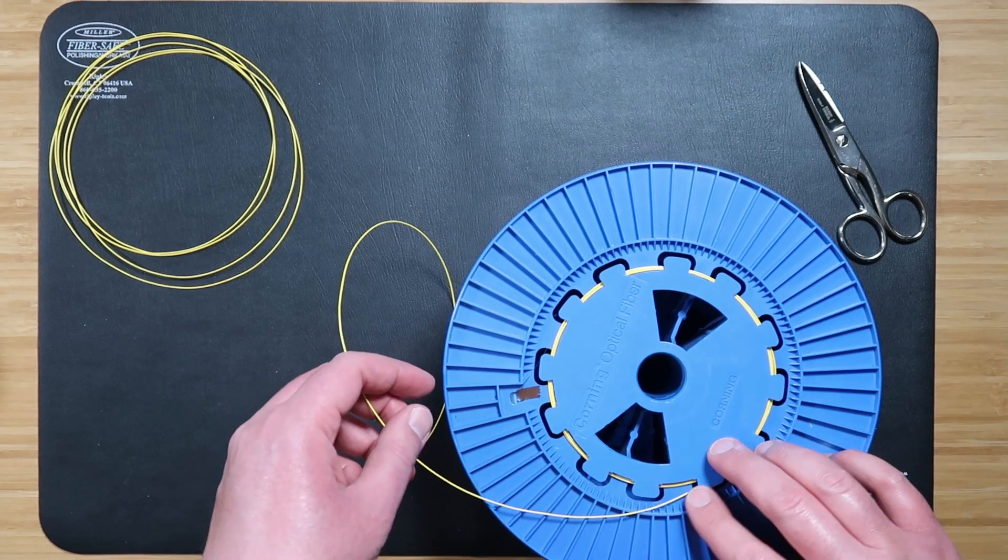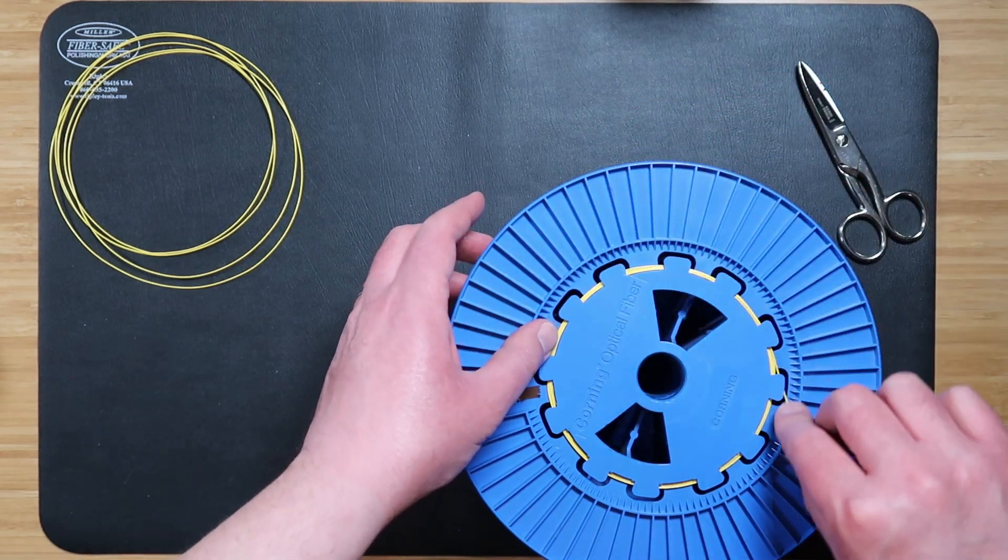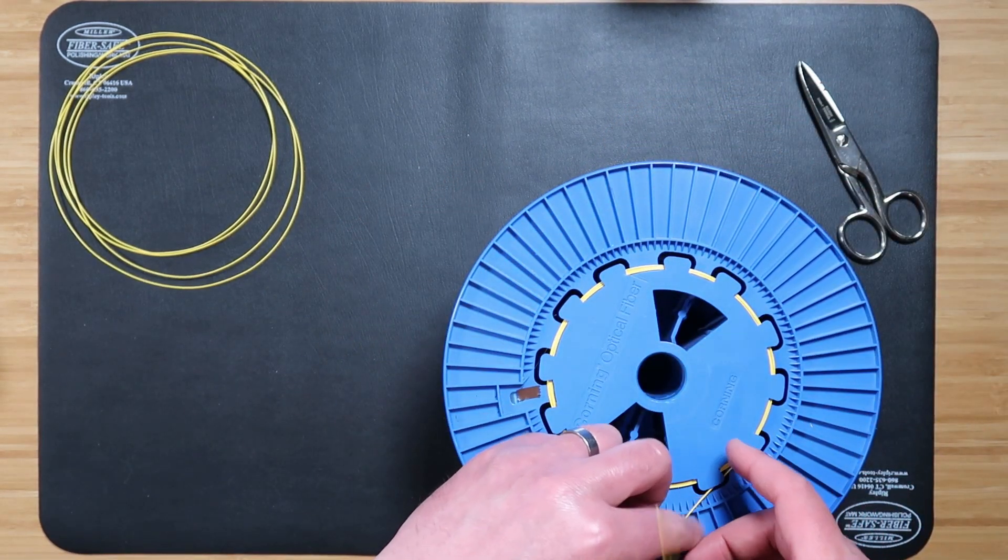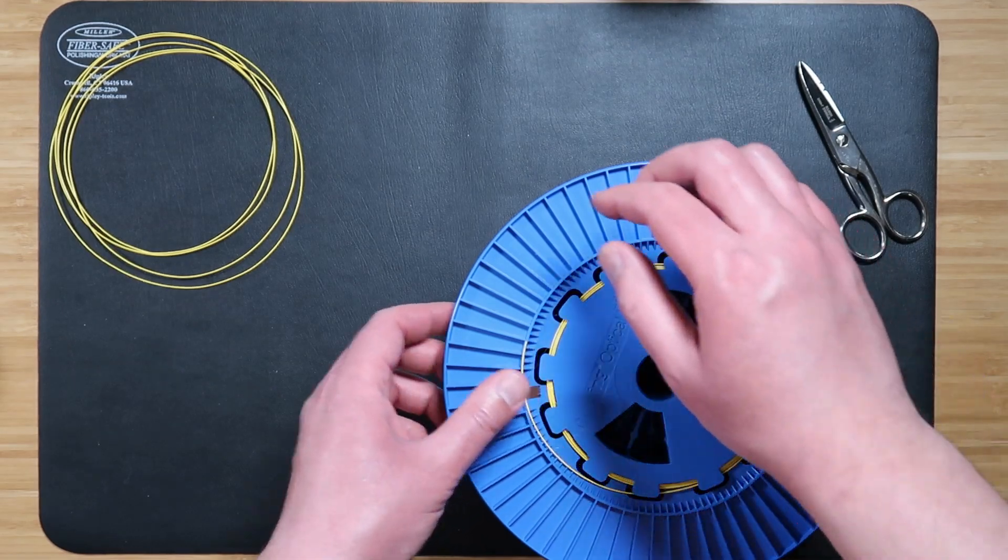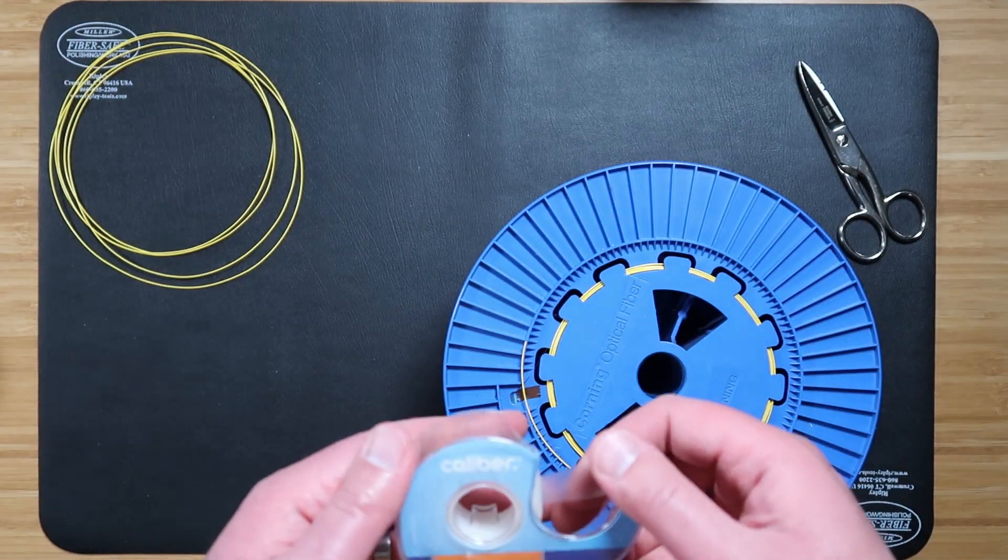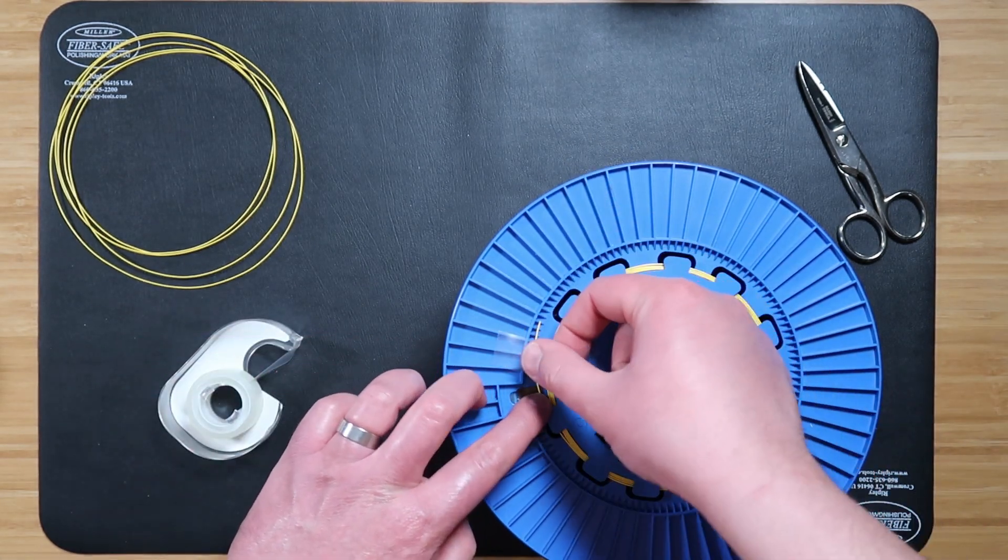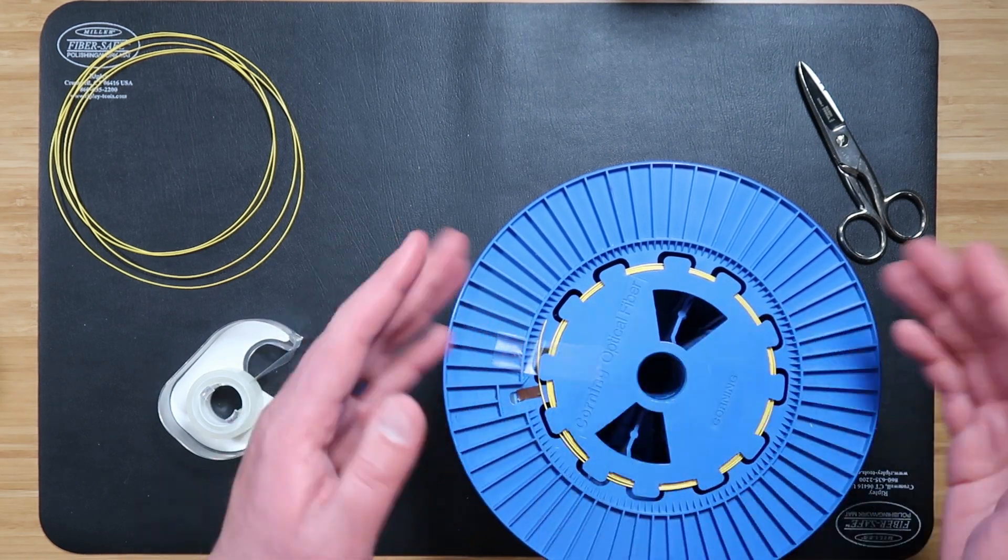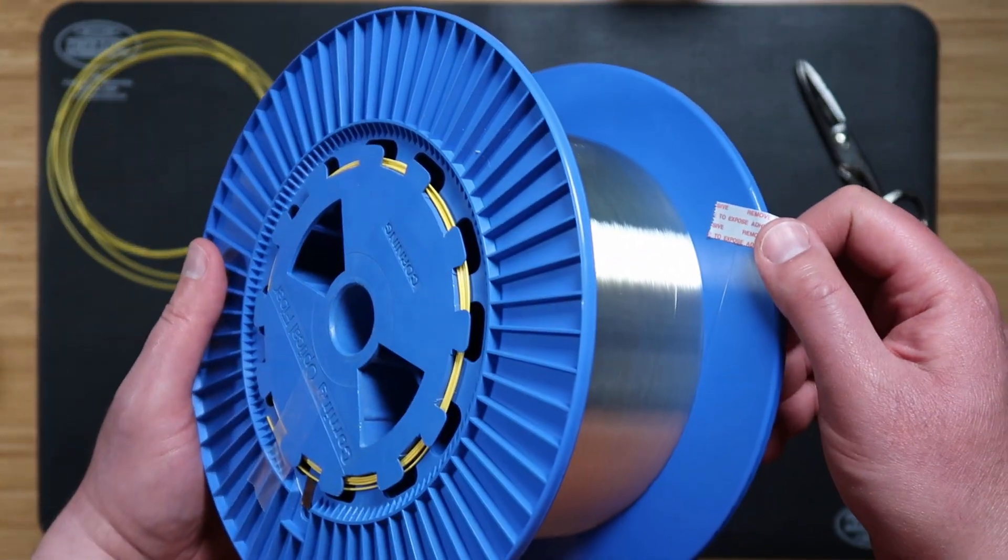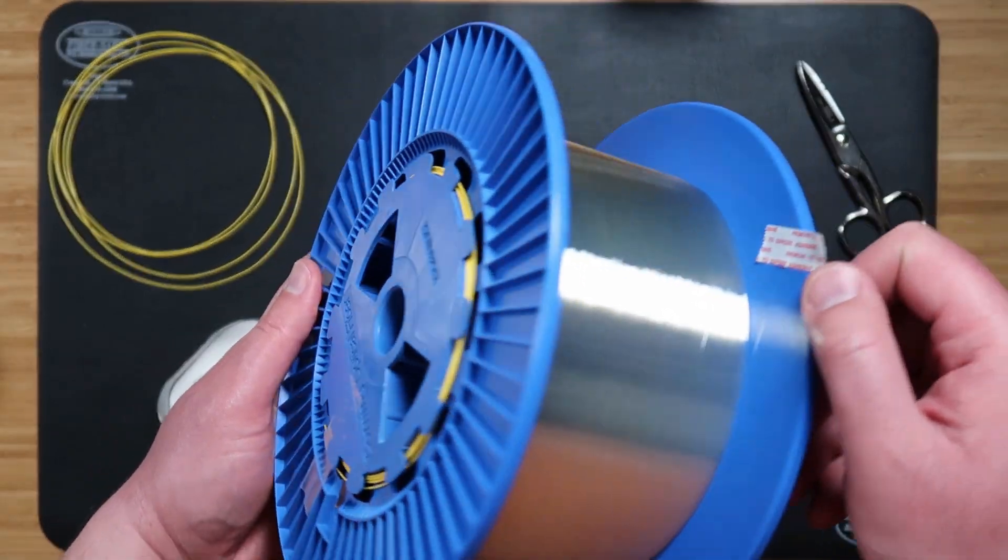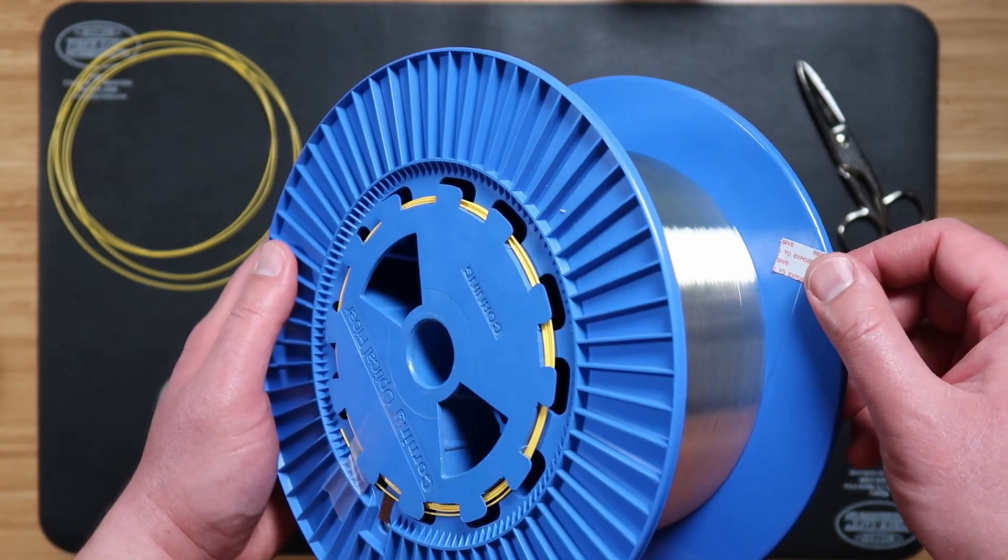For now, let's just wrap the remaining slack within the coil. I like to use a piece of just normal scotch tape to hold the fiber securely in place while you're handling it. We're going to move on to the inside fiber side, to the other end of the fiber spool to place the furcation tubing.